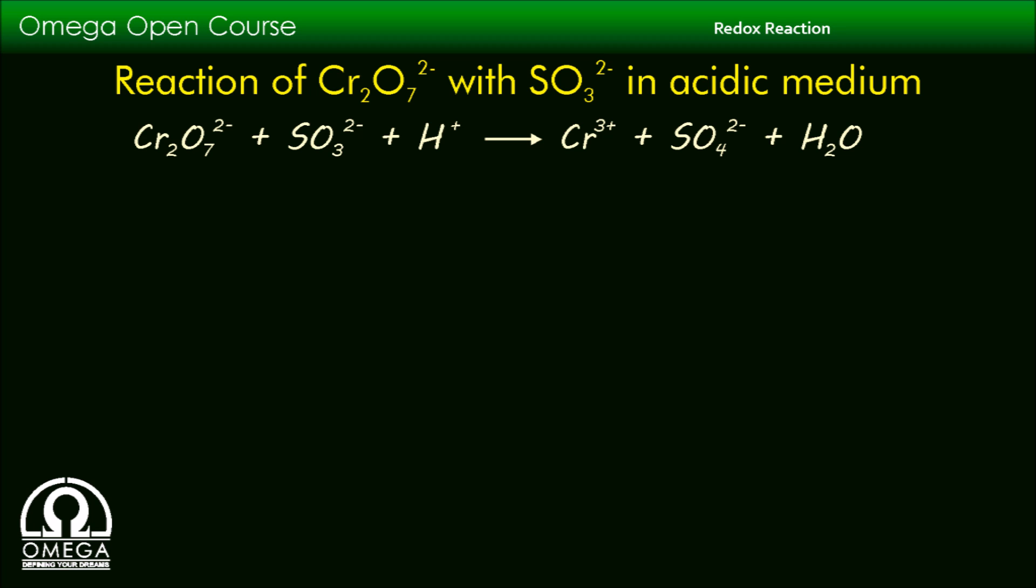First we are going to find the oxidation number of all the atoms in reactant as well as product part. In the reactant part, the oxidation number of Cr atom in dichromate ion is +6 and that of S atom in SO3^2- ion is +4. In the product part, the oxidation number of Cr atom in Cr^3+ ion is +3 and that of S atom in SO4^2- ion is +6.